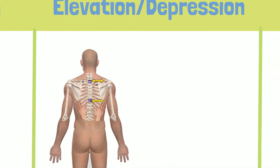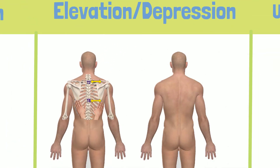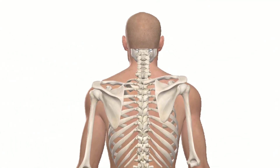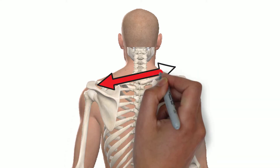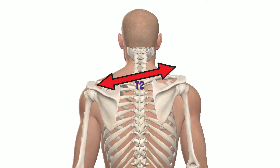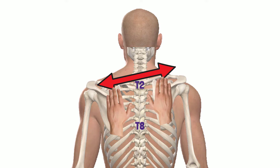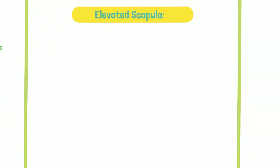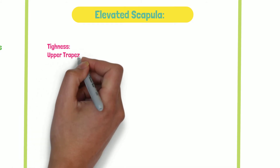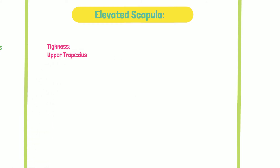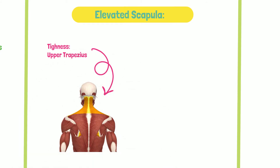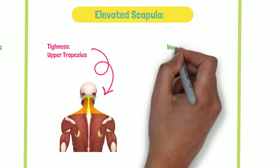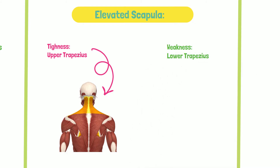Abnormal alignment related to this position is an excessively elevated scapula. Note the right scapula sitting superior on the thorax. Typically, this will occur secondary to tightness in the upper trapezius muscle, but may sometimes result from weakness in the scapula depressors, such as the lower trapezius.